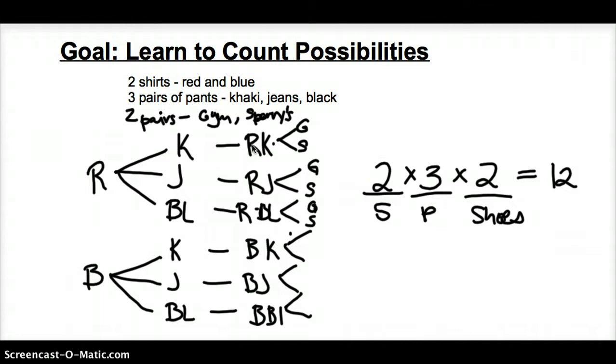And if you look, that's how many of the final branch of our tree, that's how many outcomes we would have. Red khaki gym shoes, red khaki Sperry's, red jeans gym shoes, red jeans Sperry's, and on and on. You see how the pattern goes. So, at the end of the day, I would have had one, two, three, four, five, six, seven, eight, nine, ten, eleven, twelve outcomes, and that's what I came up with my mathematical answer. So again, this is the long way, that's not what we're going to do. We're going to do the short way, okay? So, let's go and look at some other types of problems.